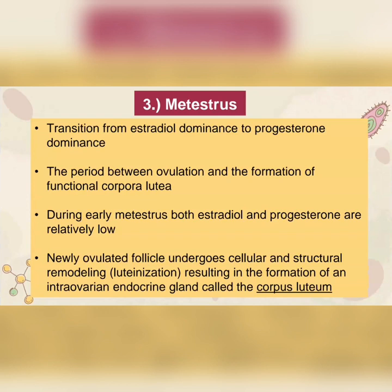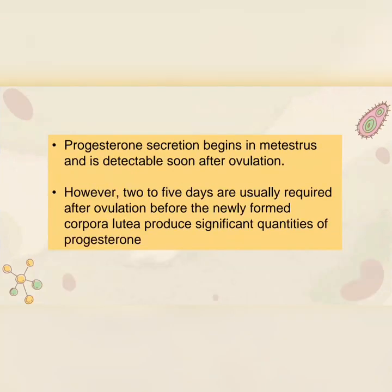For the third stage of the estrous cycle, we have metestrus. It is the transition from estradiol dominance to progesterone dominance, as progesterone is responsible for the maintenance of pregnancy or gestation. It is the period between ovulation and the formation of functional corpus lutea. During early metestrus, both estradiol and progesterone are relatively low. The newly ovulated follicle undergoes cellular and structural remodeling called luteinization, resulting in the formation of an intra-ovarian endocrine gland called the corpus luteum. Progesterone secretion begins in metestrus and is detectable soon after ovulation; however, two to five days are usually required before newly formed corpus lutea produce significant quantities of progesterone.